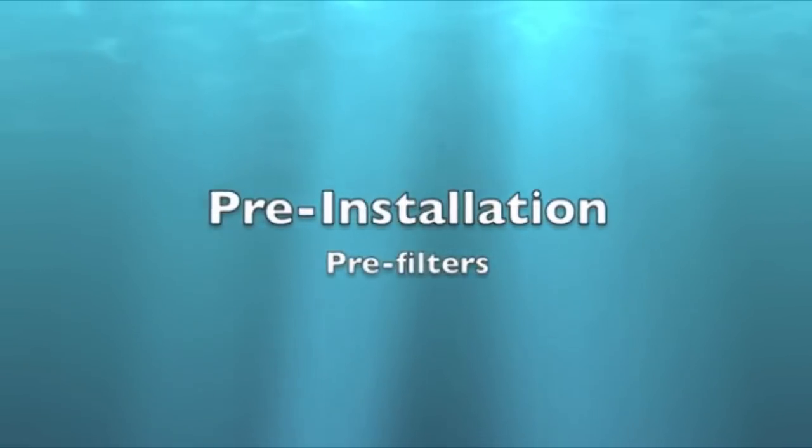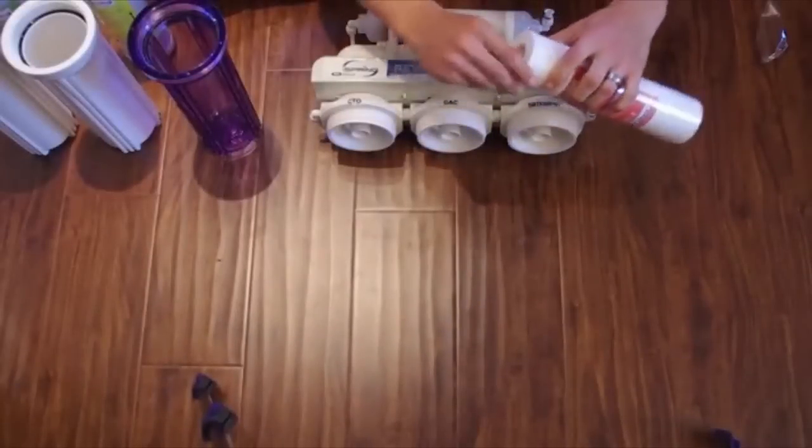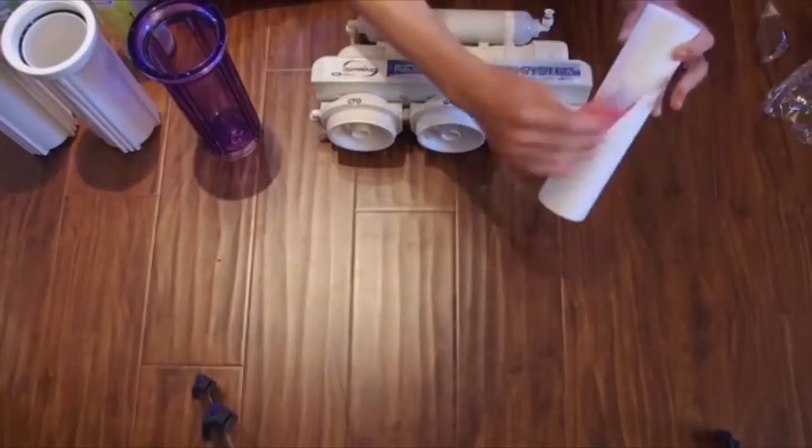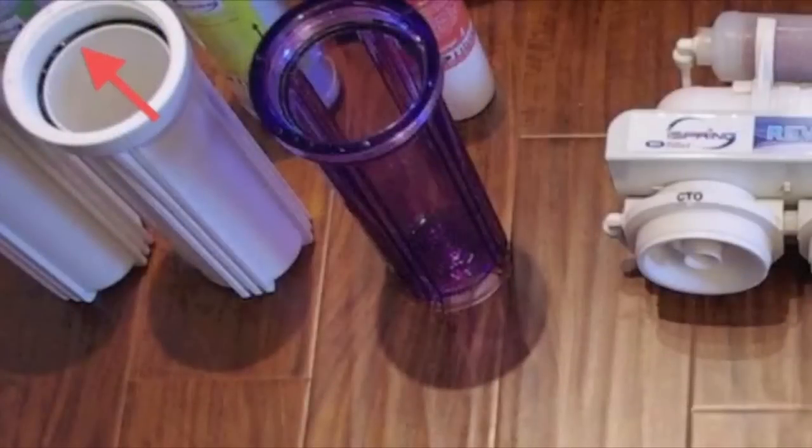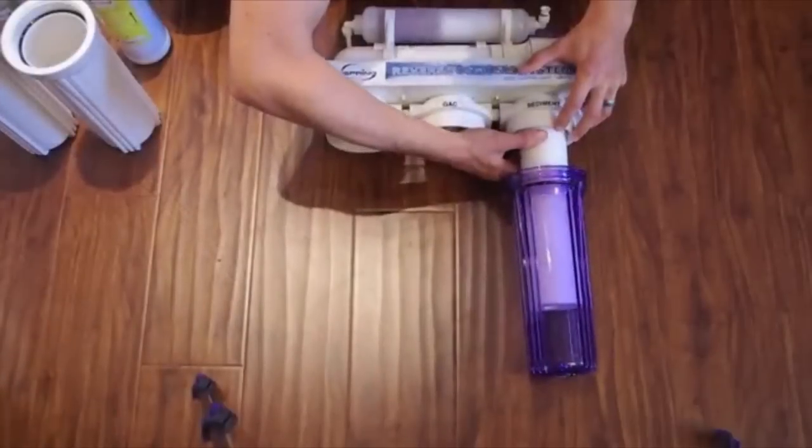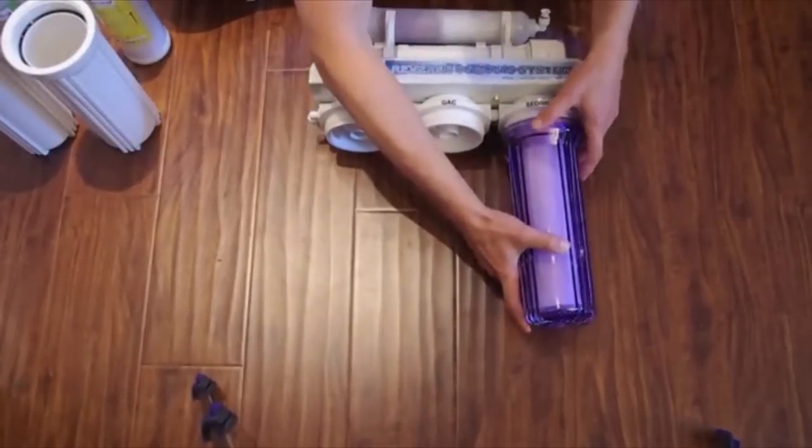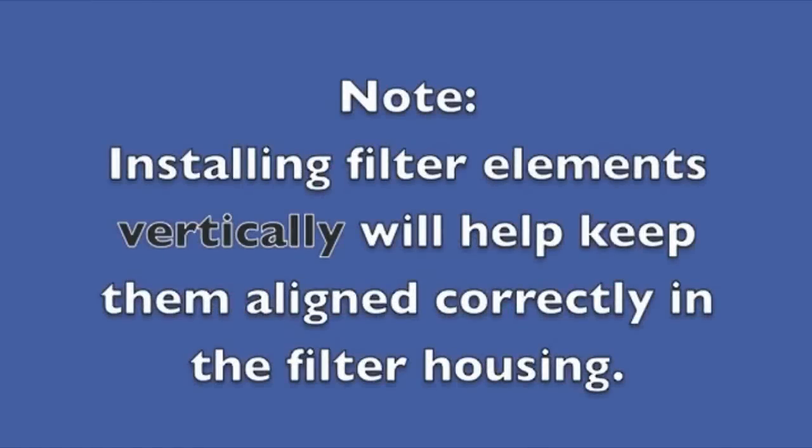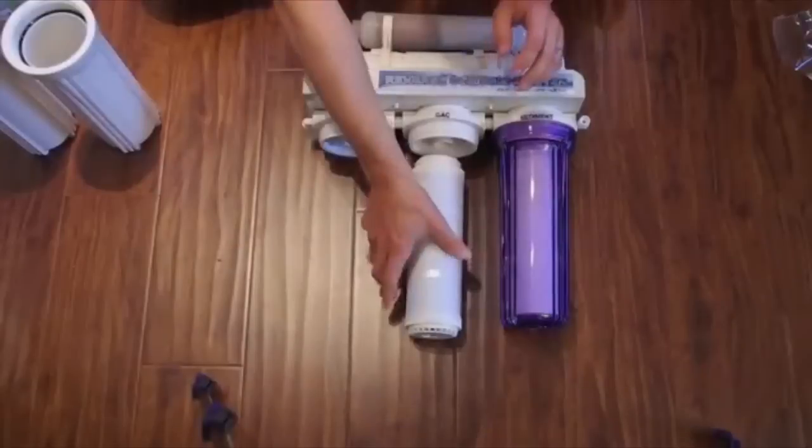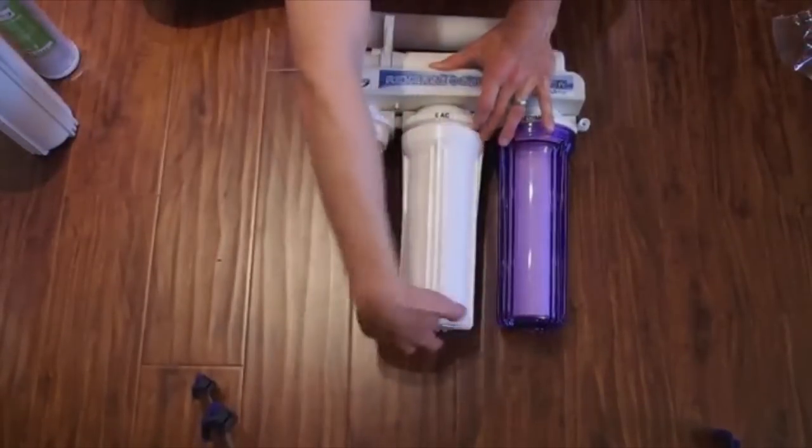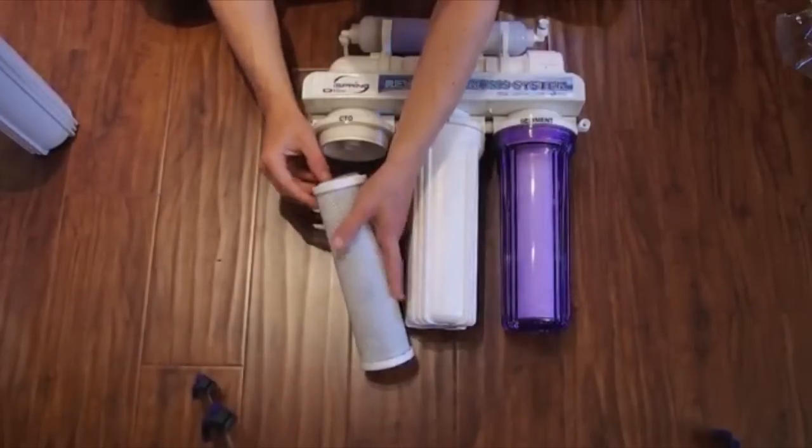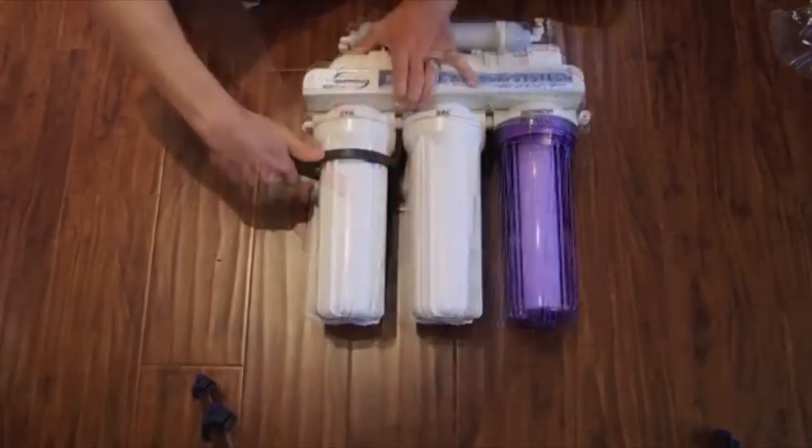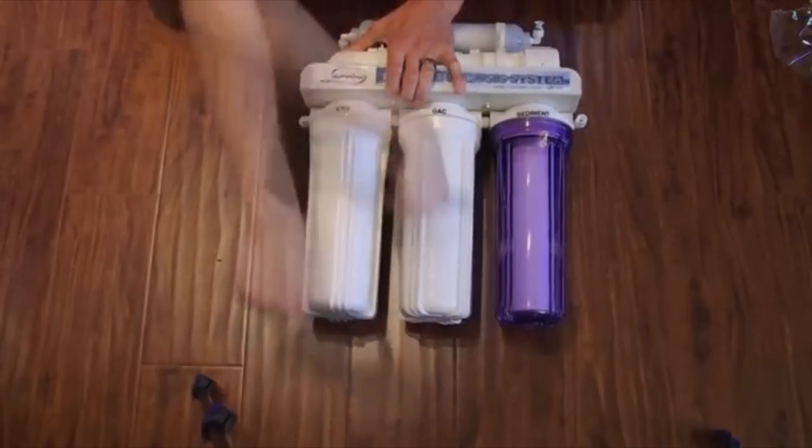Install pre-filters. Remove the protective wrap from each filter before installing. Make sure the O-ring is seated in the top of the housing. Install the filter in the housing and then carefully screw the housing onto the filtration system. Installing filter elements vertically will help keep them aligned correctly in the filter housing. Repeat the process for the two remaining filter elements, making sure to match them to the correct location. Tighten each filter housing using the supplied wrench.